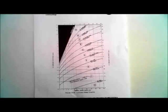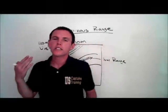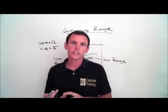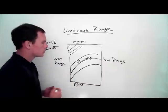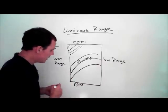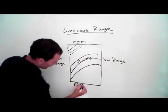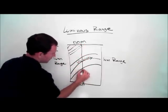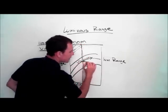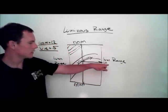Luminous range is the distance you can see a light with a certain intensity and a certain meteorological visibility. Given a nominal range of 12 and a visibility of 0.5, we find the nominal range on the chart, draw a line between the top and bottom values, see where it hits the visibility curve, take it straight over, and read the luminous range. That gives us our answer.